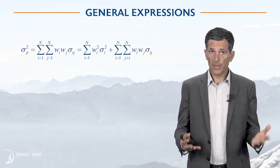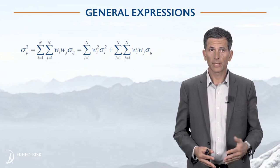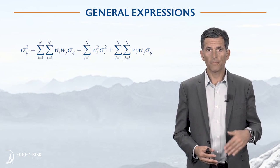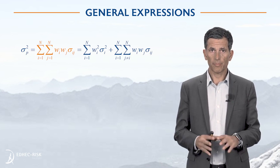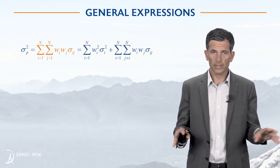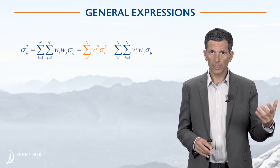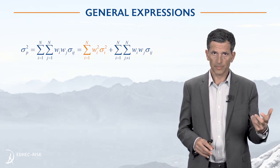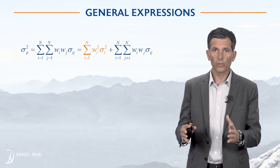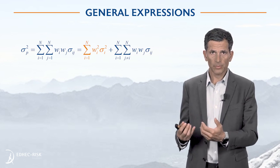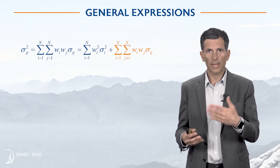We start with portfolio variance, which is an expression we've already looked at several times, given by the sum of W_i, W_j, Sigma_ij. We typically break it down into two parts. The first part is W_i squared times Sigma_i squared, which is the contribution that comes from the variance of each component. And then we have the covariance terms — the overlapping terms — which is W_i, W_j, Sigma_ij.